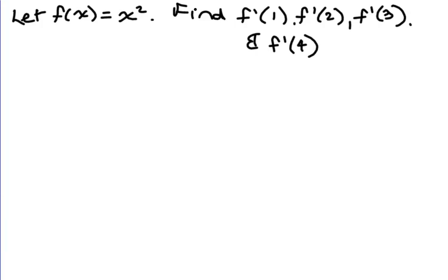In the last lesson we learned how to find the slope of the tangent line at a point using limits. We also called this the derivative or f prime. Now we're asked to find f prime of 1, f prime of 2, f prime of 3, and f prime of 4 for the same function f of x equals x squared.